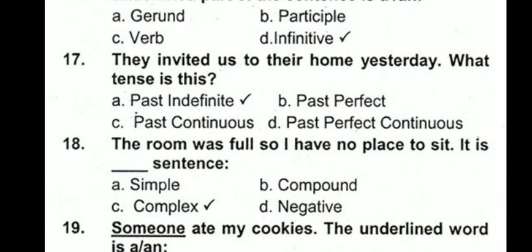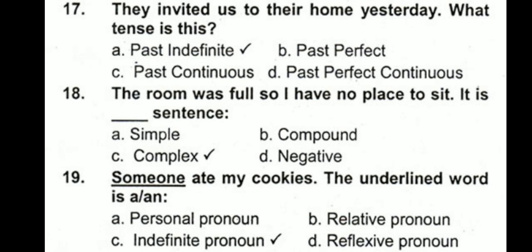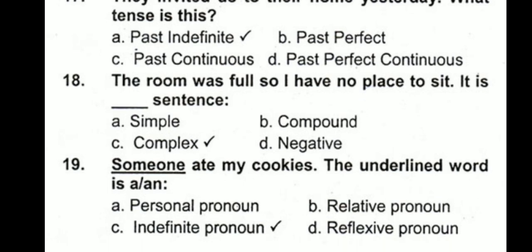In past perfect tense, we use 'had.' In past continuous tense, we use 'was/were' plus first form plus '-ing.' In past perfect continuous tense, we use 'had been.' Since 'had been' was not used here and the second form is used, this is a past indefinite tense.